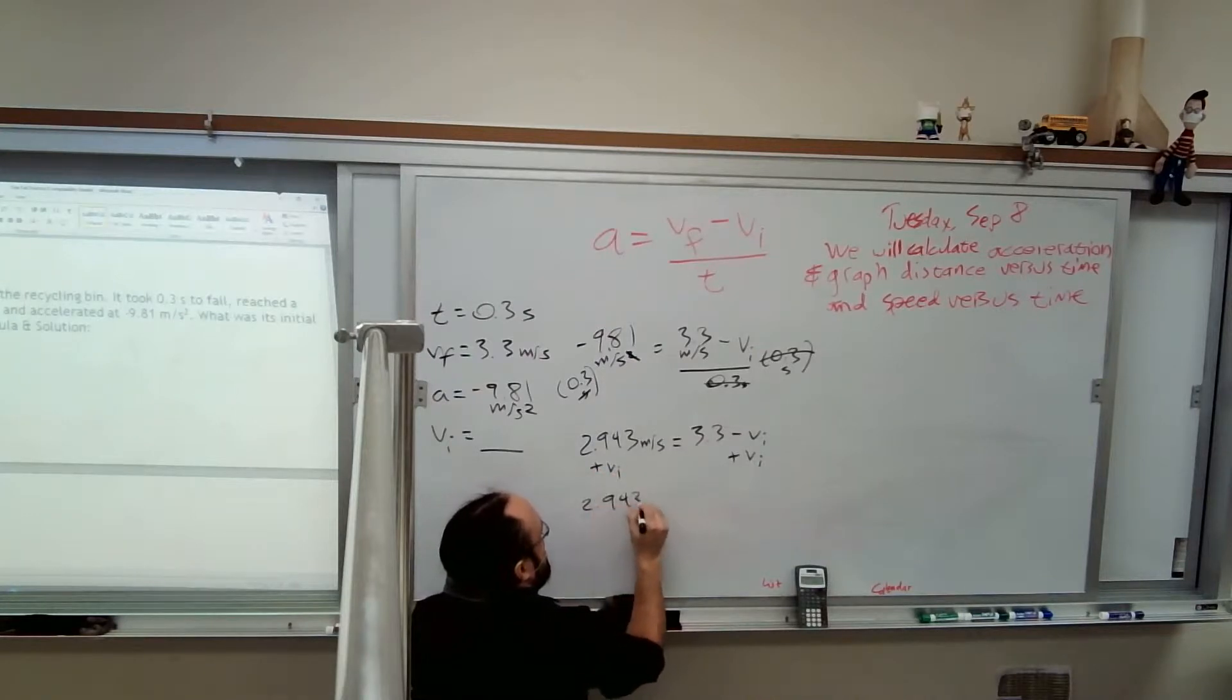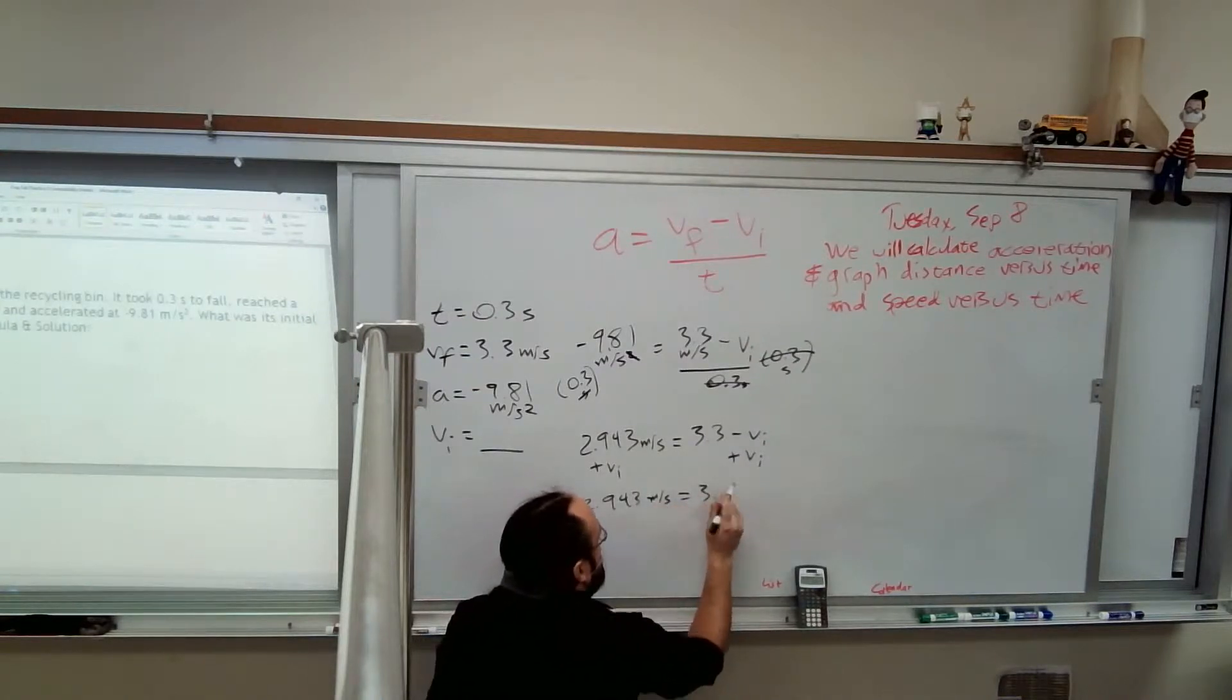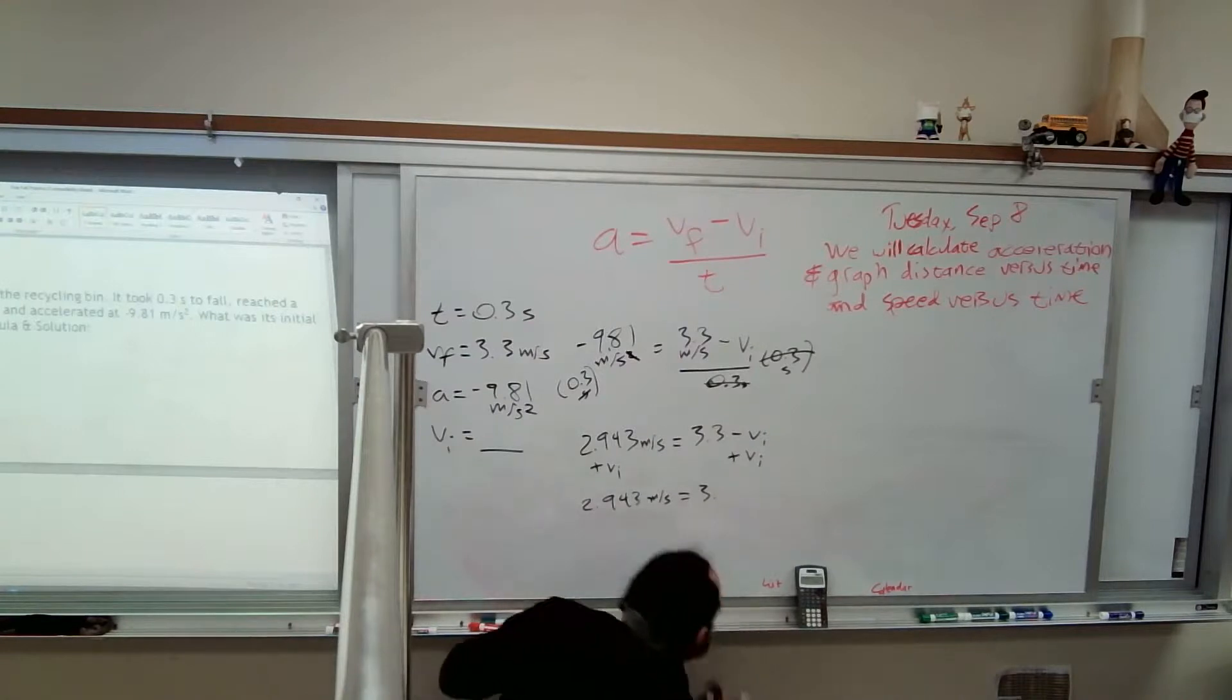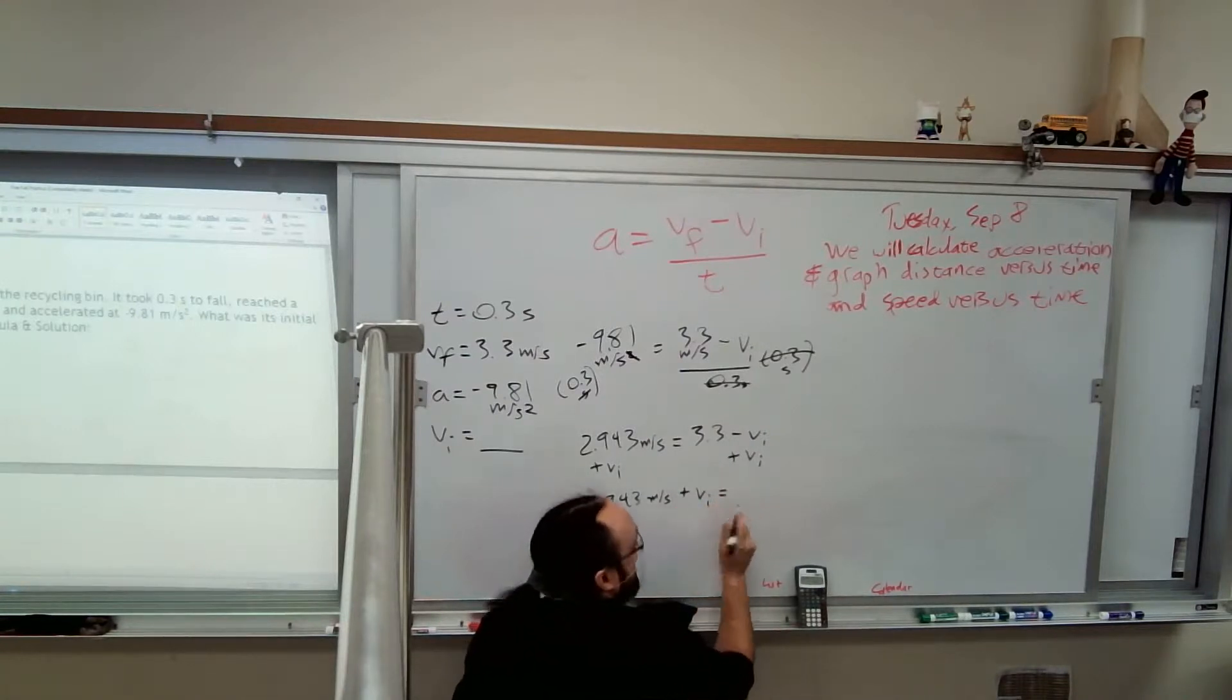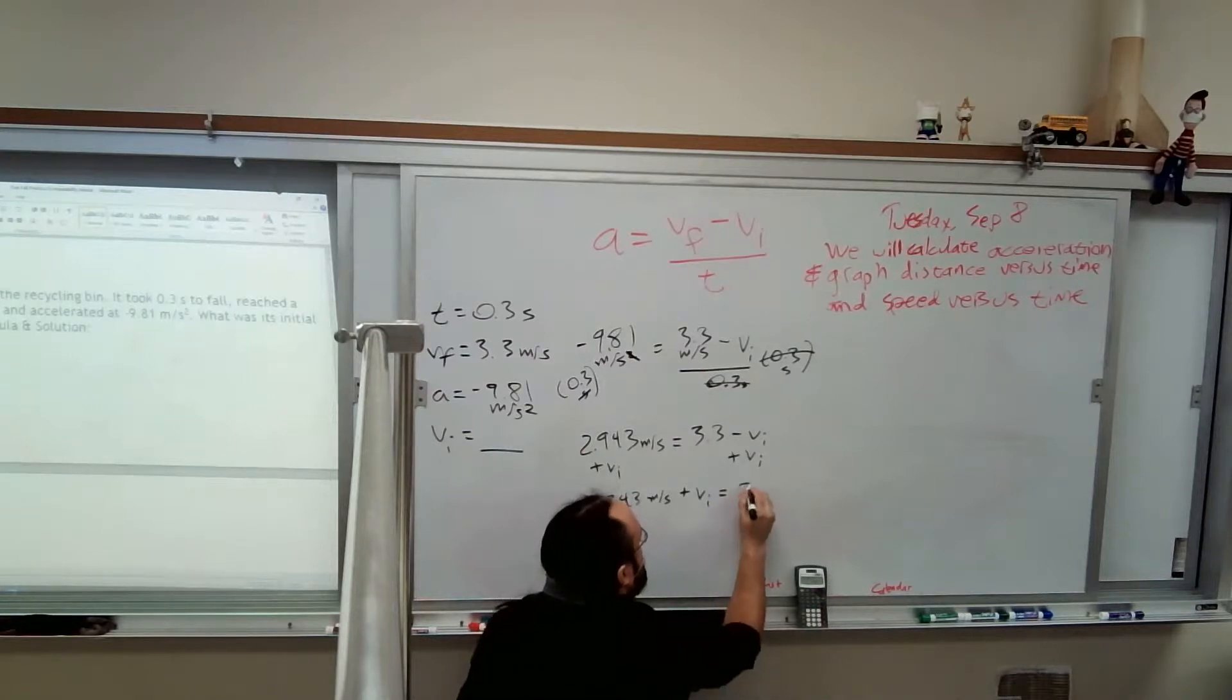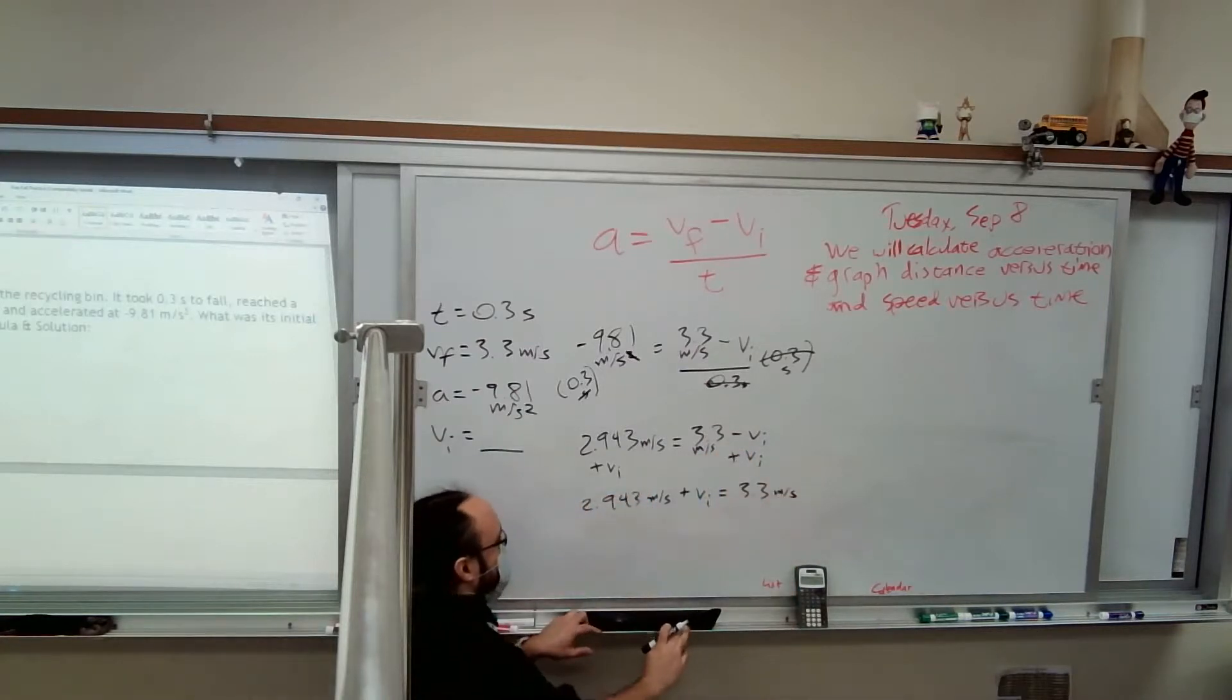And I forgot to write Vi. Plus Vi equals 3.3. I didn't write my unit. I didn't know what that number was. So I better keep my unit on there so I keep everything straight.